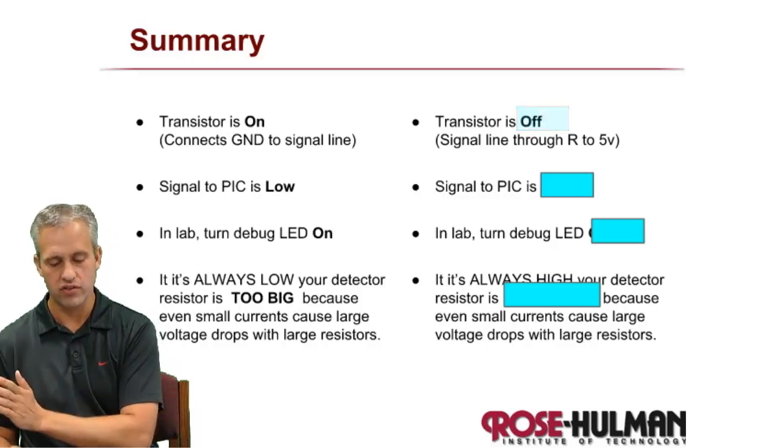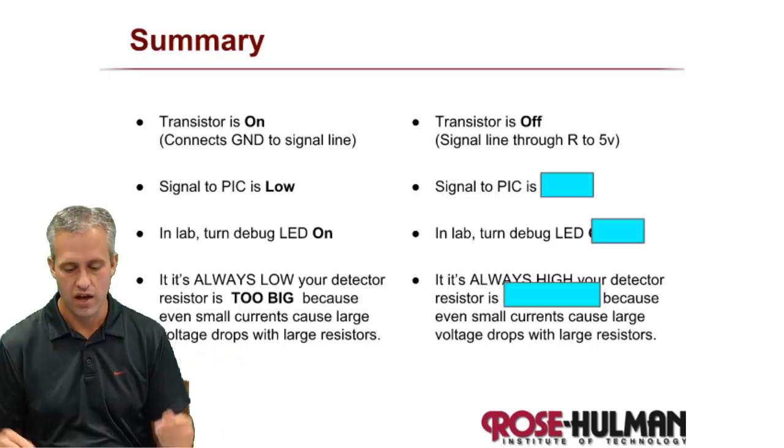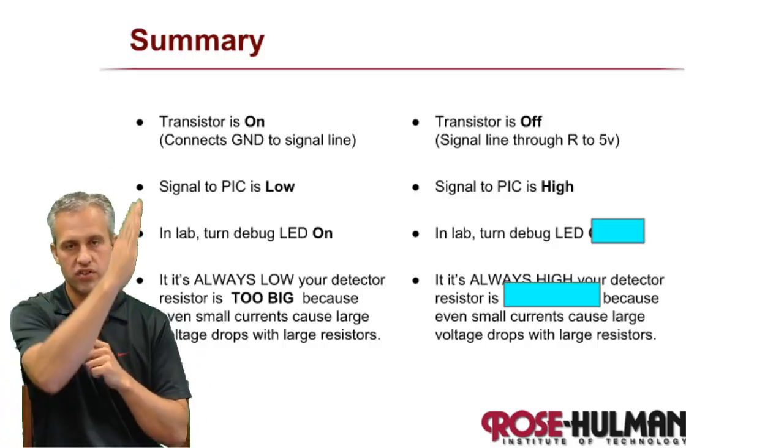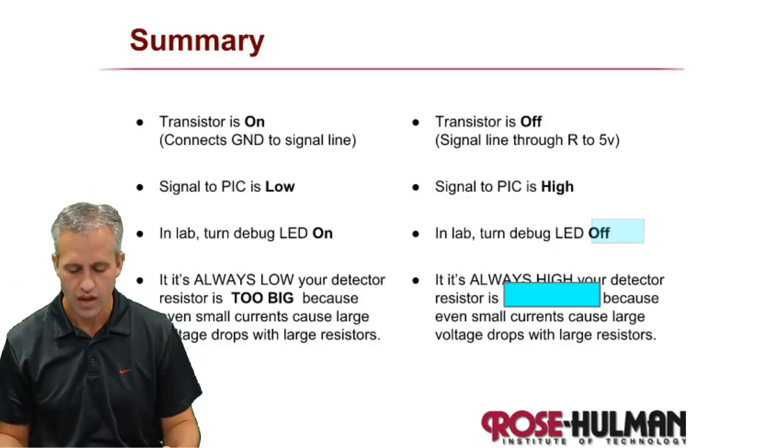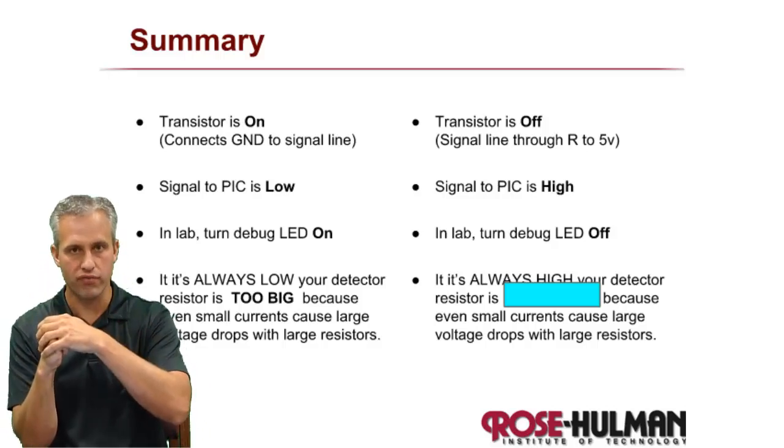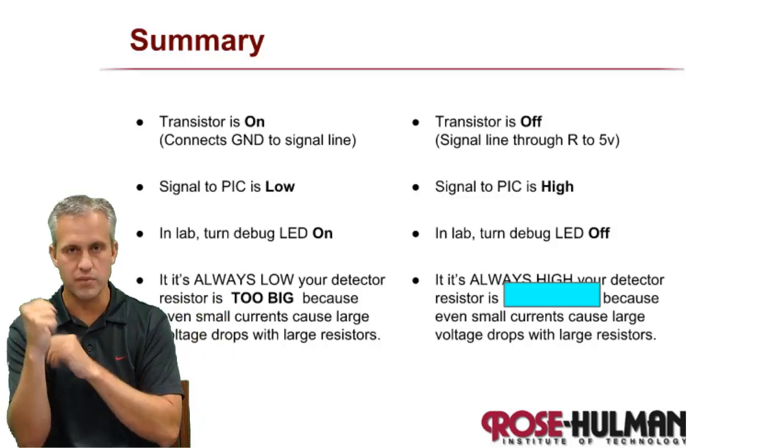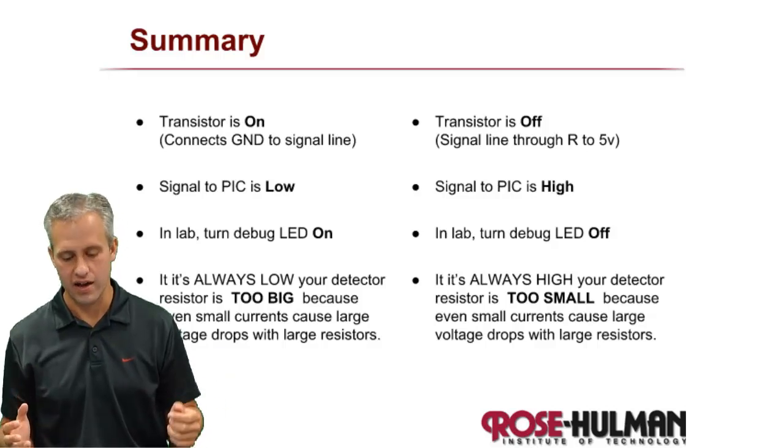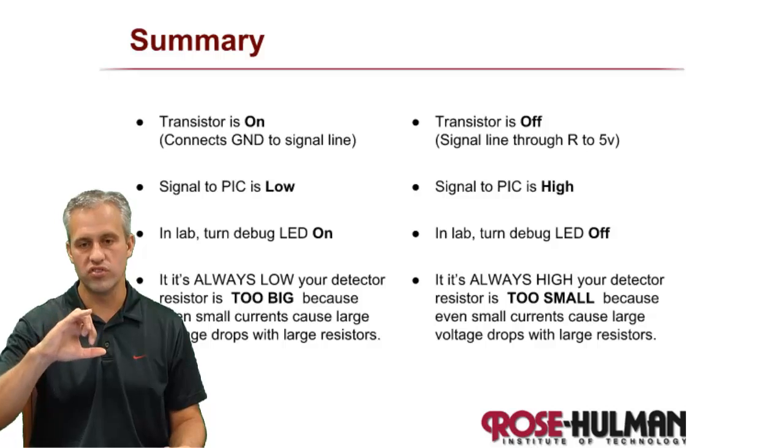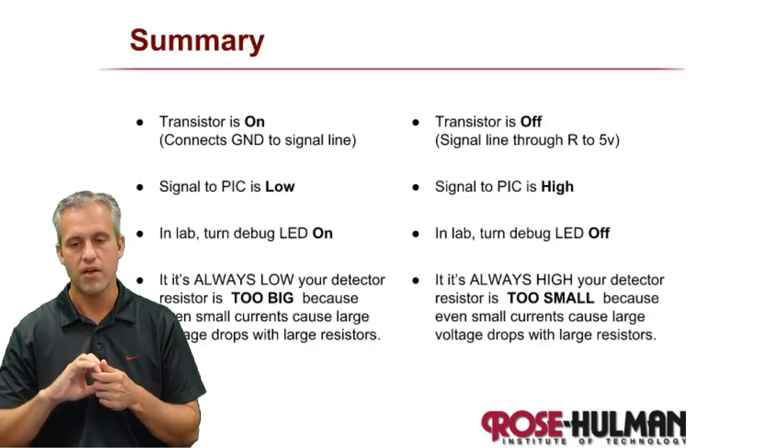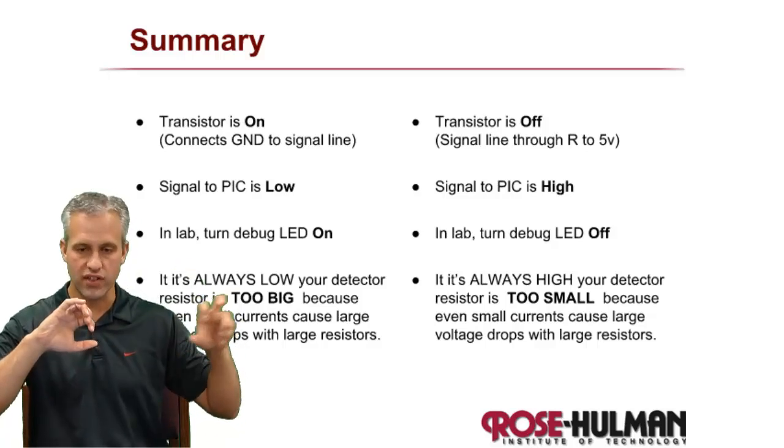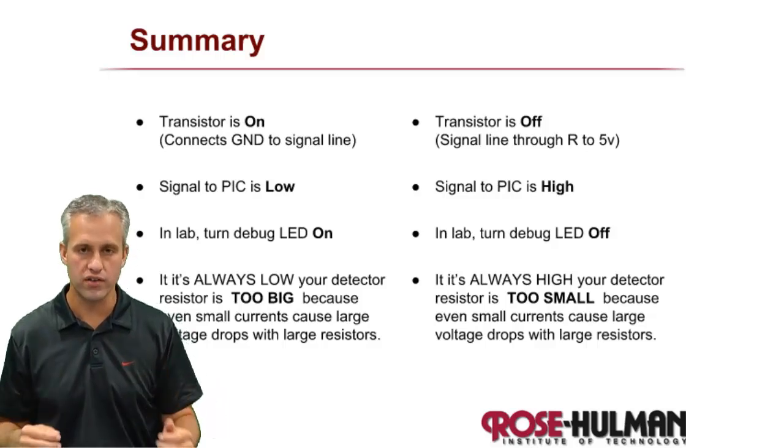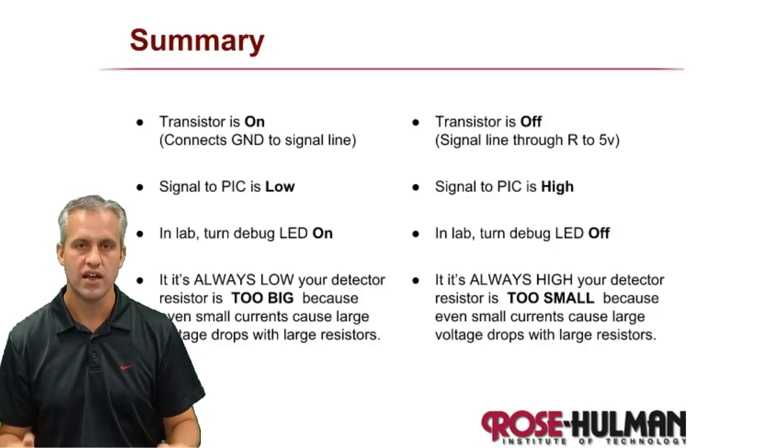If however, the transistor is off, so it's in darkness, then that means that the signal going to the PIC will actually be high because it's just seeing the resistor and nothing's going through the transistor. If it's seeing darkness, your debug LED in the lab, you want it to be off. So no light, it's seeing no light. So your debug light is also off. If you run into the situation where no matter what, it's always high, then the problem is that your resistor that you're using is too small. So it's so small that even if it sees a lot of light, even that a lot of light, which lets a lot of current through, it can't get low enough no matter what. So that's the adjustment that you would have to make if you ran into that situation.